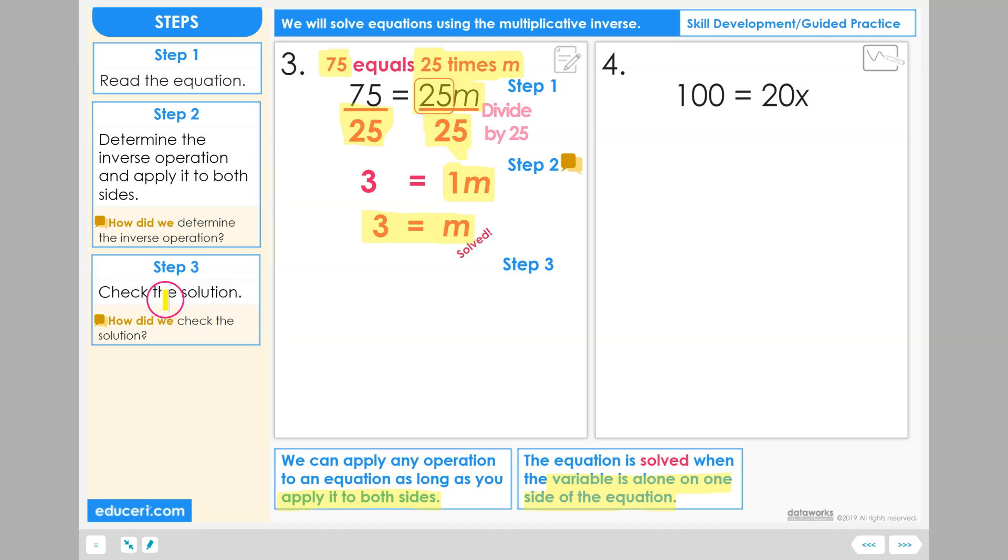Step 3: Check the solution. To check the solution, we take the original equation 75 equals 25 times m, and we replace m with 3.